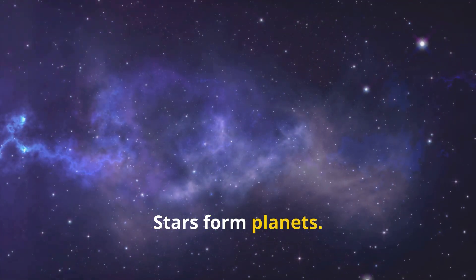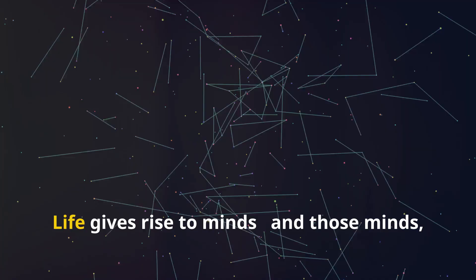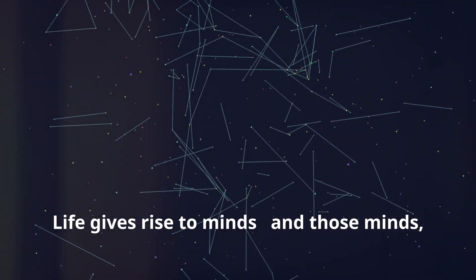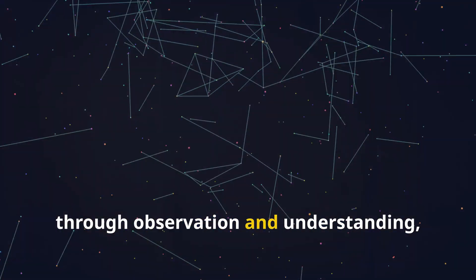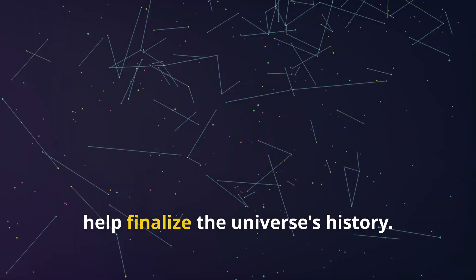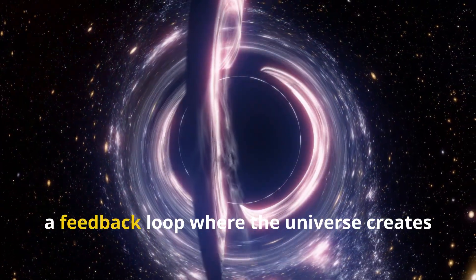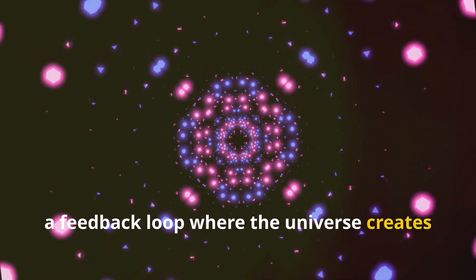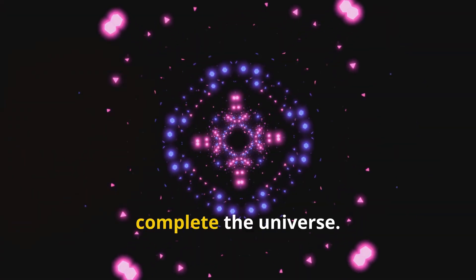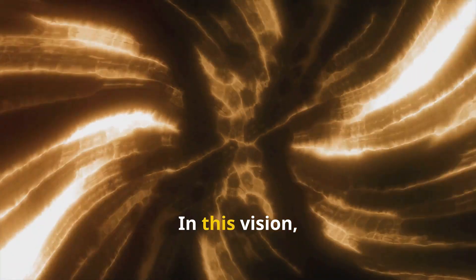Stars form planets. Planets birth life. Life gives rise to minds, and those minds, through observation and understanding, help finalize the universe's history. He called this the self-excited circuit, a feedback loop where the universe creates observers who, in turn, complete the universe.